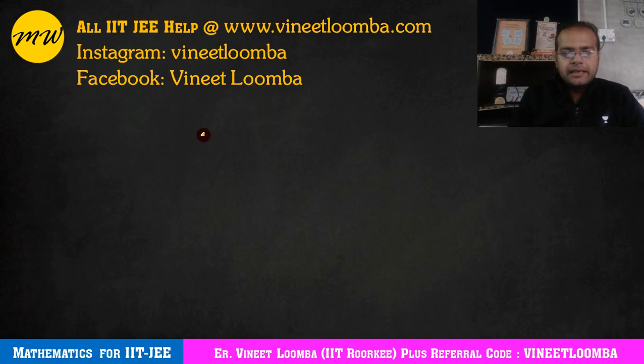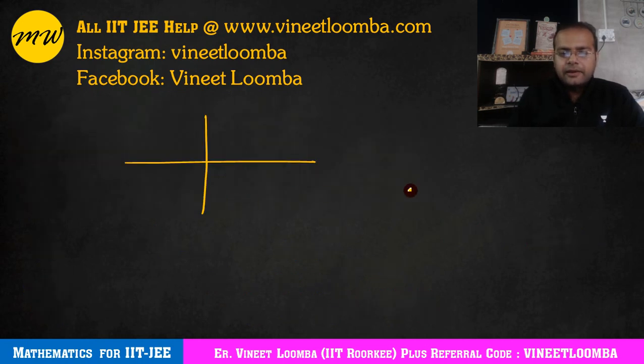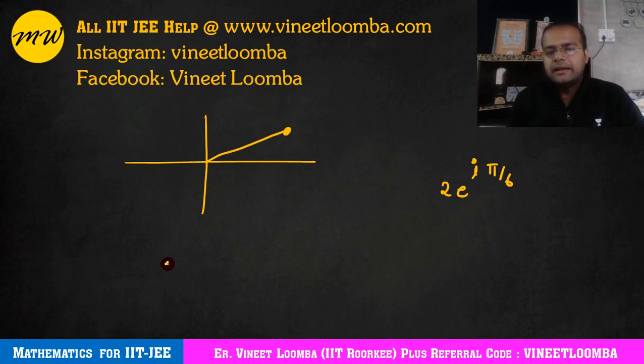So first you see when we put k value zero, then if we put k value zero here, then e to the power, 2 e to the power i pi by 6 will form. Let's say this is our first root. Now we know that in nth root of unity, there is a difference of 2 pi by n between all roots. So 2 pi by 6 difference will be there, that will be nothing but pi by 3. So 60 degree difference should be there. This angle we know will be 30 degrees because e to the power i pi by 6.